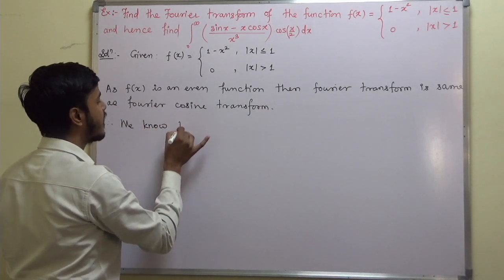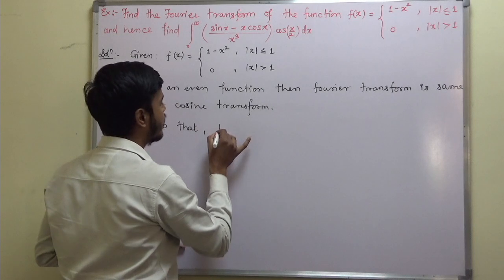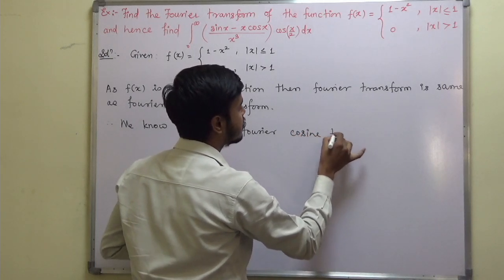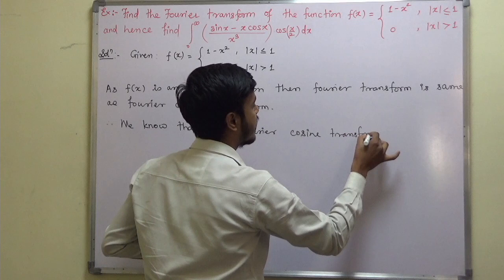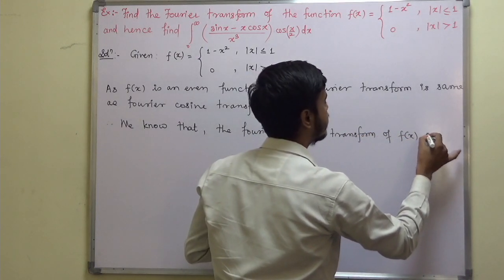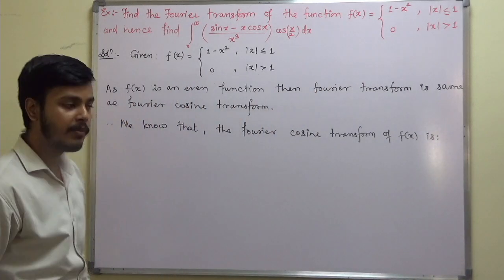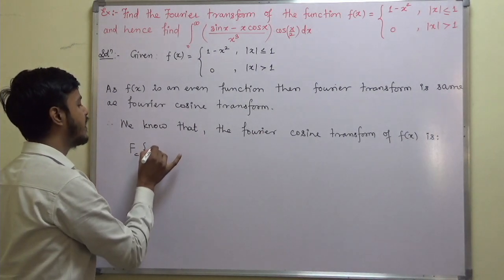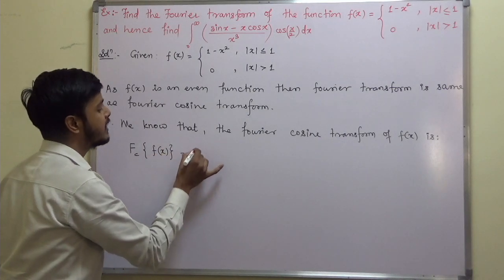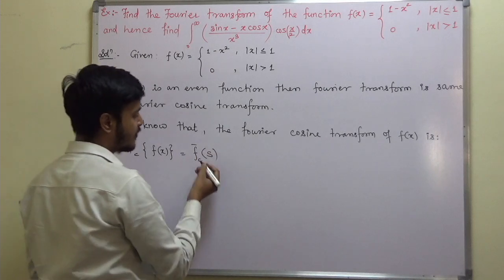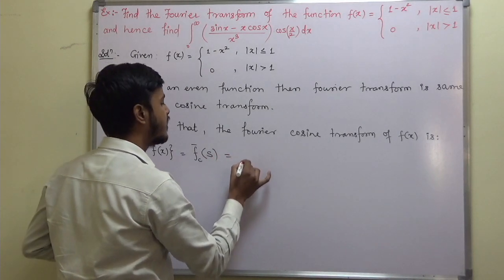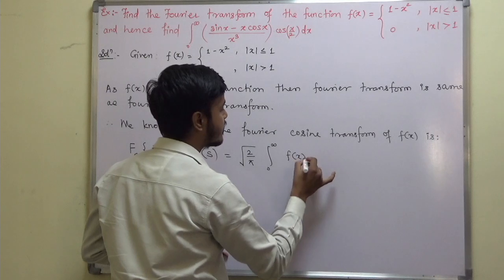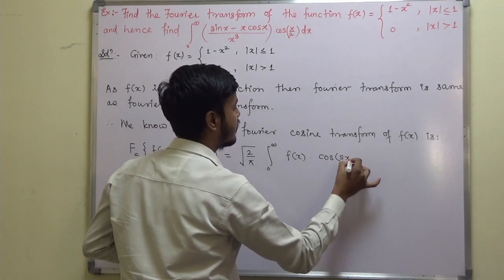We know that the Fourier cosine transform of f(x), which we denote by F_c bar of s, is nothing but: under root two by pi, integration from zero to infinity, f(x) into cosine of sx, dx.